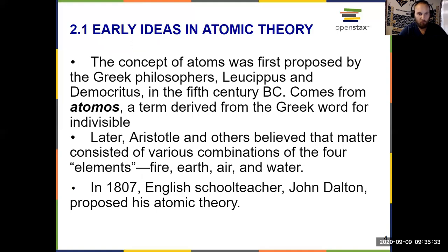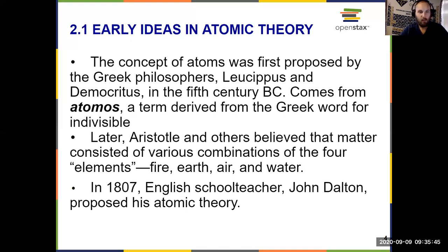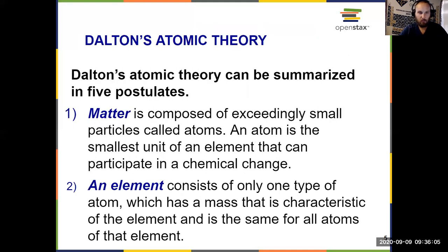Atoms were first proposed by the Greeks, which we talked about in chapter one. It comes from 'atomos,' meaning indivisible — it's the smallest possible thing you can get while still maintaining a unique chemical identity. We also have later work by Aristotle that gave us the four different elements: earth, air, fire, and water. But what we're going to focus on in this video is the 1800s, when John Dalton proposed his atomic theory, which consisted of five postulates that might seem familiar to you.